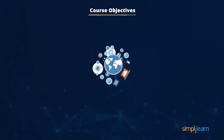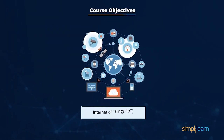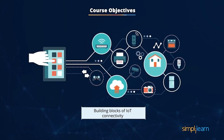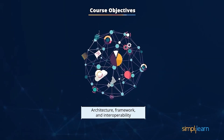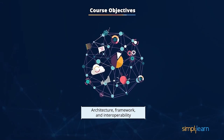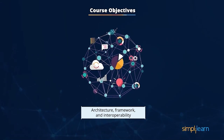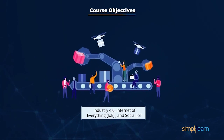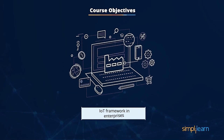After completing this course, you should be able to explain the concept of Internet of Things comprehensively, describe hardware, software, and other connectivity building blocks of IoT, describe design considerations pertaining to architecture, framework, and interoperability, explain the security considerations with IoT pertaining to vulnerabilities, explain Industry 4.0, Internet of Everything, and social IoT, and finally, describe the IoT framework in enterprises.